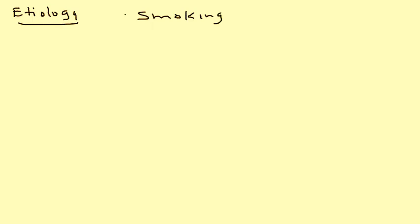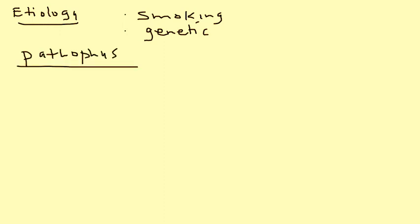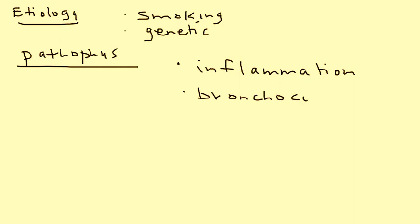In terms of etiology, the most common reason a person can develop COPD is smoking, and there is a genetic component to COPD as well. In terms of pathophysiology, there are some key components to know. The first one is inflammation of the airways, and the next one is bronchoconstriction.